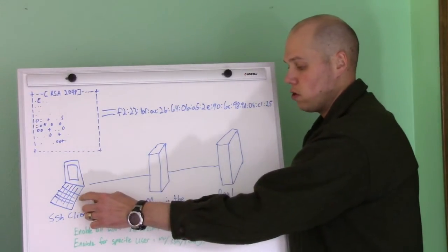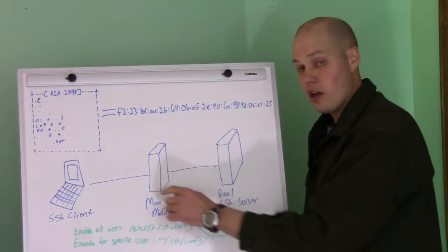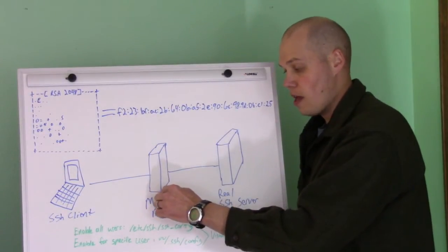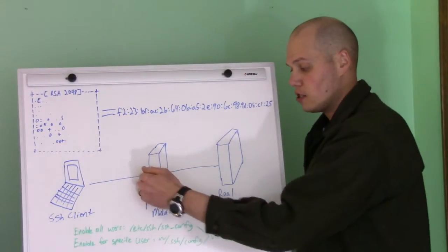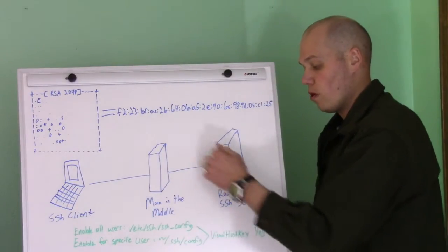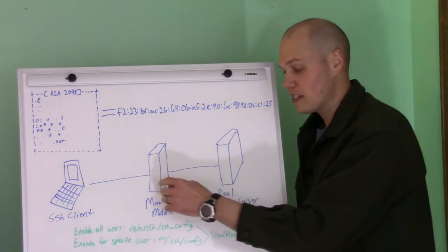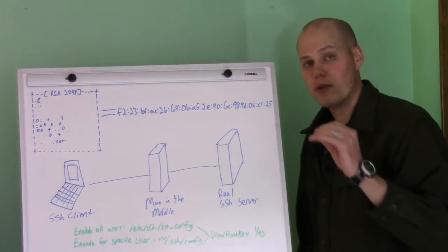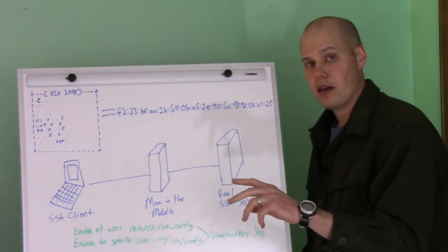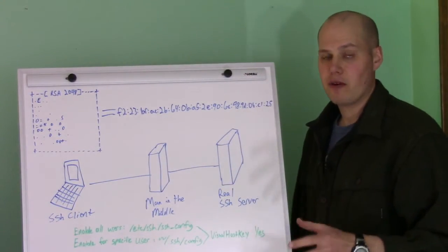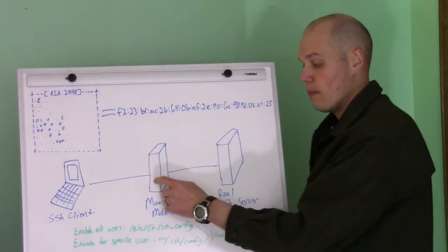So you think you're connecting to the real server, you actually ended up connecting to this, but as it gets the connection, it basically forwards it to the real server, and it acts as a man-in-the-middle, so it's able to see all your passwords that you're typing in, any data you're transferring, basically anything that's going on, the man-in-the-middle can see.